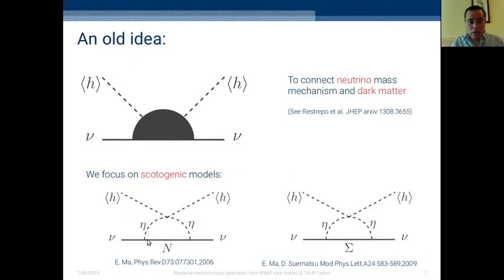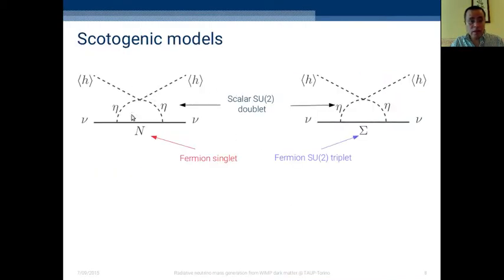We are focusing on scotogenic models that are basically two types. Ernest Ma is the main author of this work. You have two different particles inside. In one case, the mediator in the loops is a fermion singlet, like a right-handed neutrino but with an extra symmetry that protects this at one loop instead of tree level. In both cases, you require a scalar SU(2) doublet similar to a Higgs but with an extra symmetry. In the second model, there is a fermion SU(2) triplet in the loop that gives different phenomenology.